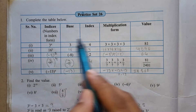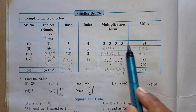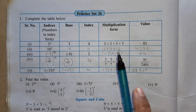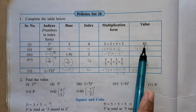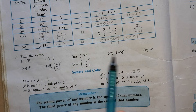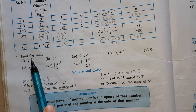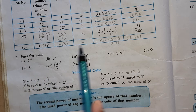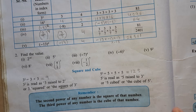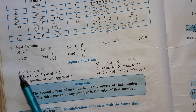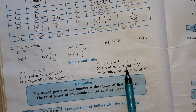This 3 is called the base and 4 is called the index. The multiplication form, when solved, gives the product which is called the value. How to read the index form: 2 raised to the power 10, negative 7 to the power 4, negative 6 to the power 3, and so on. There are two special names for powers 2 and 3 — square and cube.